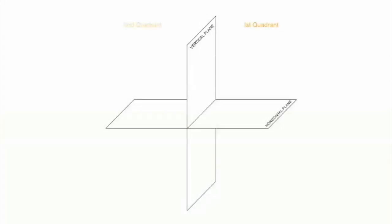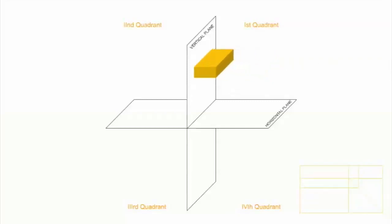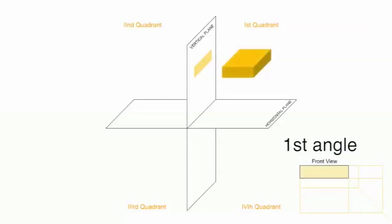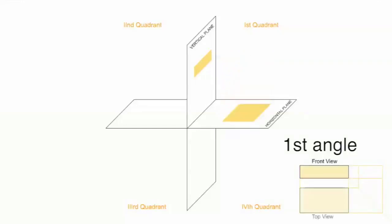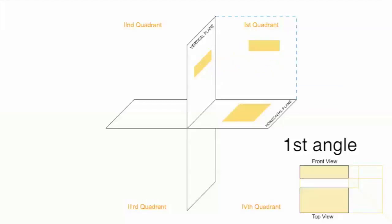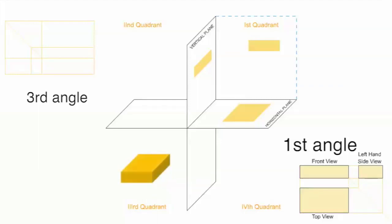We have four quadrants: first, second, third, and fourth. When the object is in the first quadrant, the observer sees from the front and projects on the vertical plane, so we draw the front view. For the top view, the observer sees from the top and projects on the horizontal plane, so the top view comes down. When the observer sees from the left side, he projects on that side plane, so in first angle the left side view goes to the right hand side.